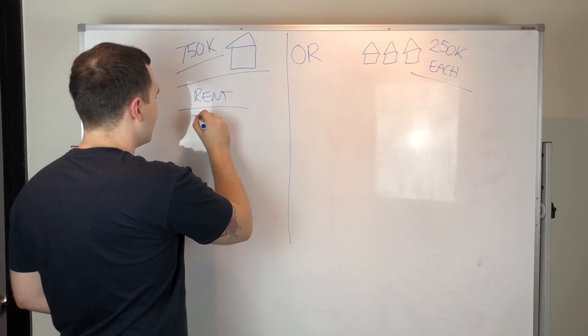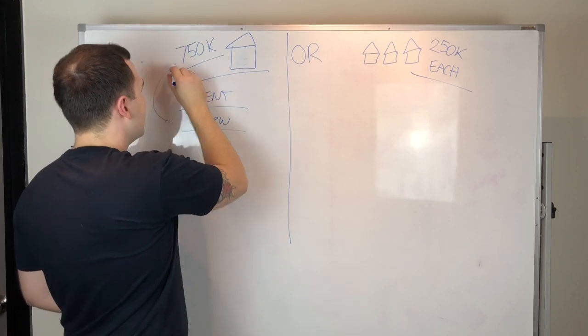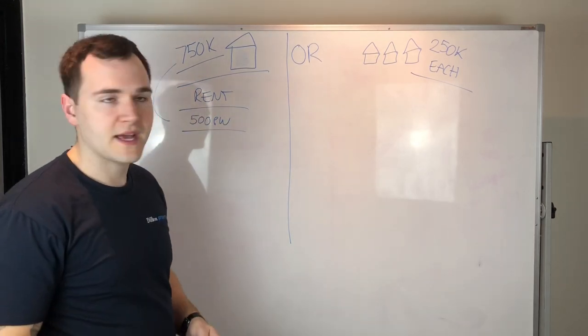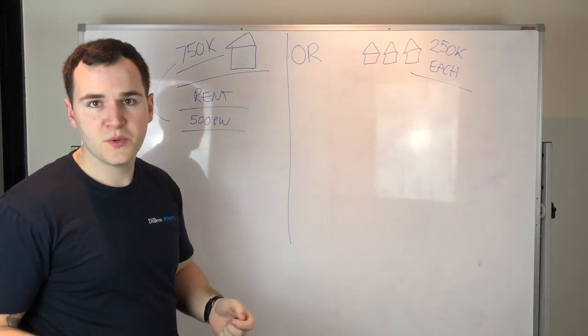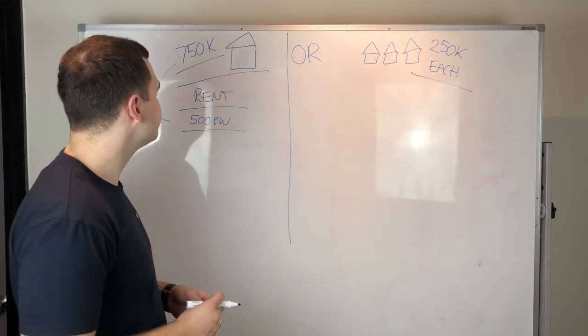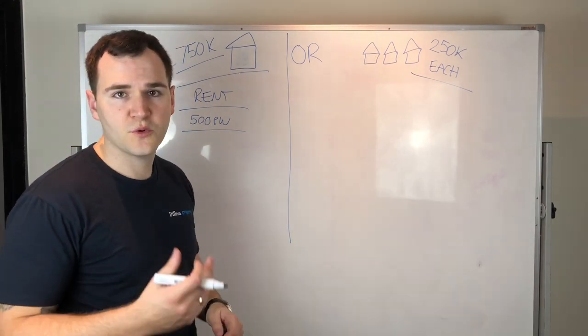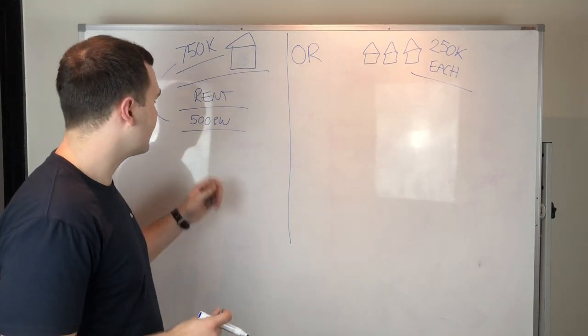So rent's probably only going to be about $500 per week and it's going to have to service the mortgage for that. So $500 per week, $750,000 purchase price, it's pretty crap rental return in my opinion. It's probably about a 3% yield or 4% yield roughly.